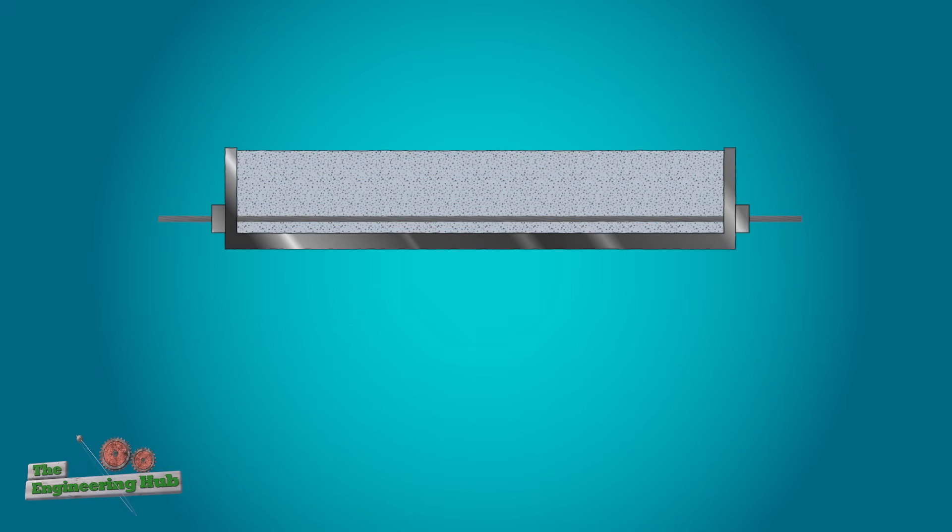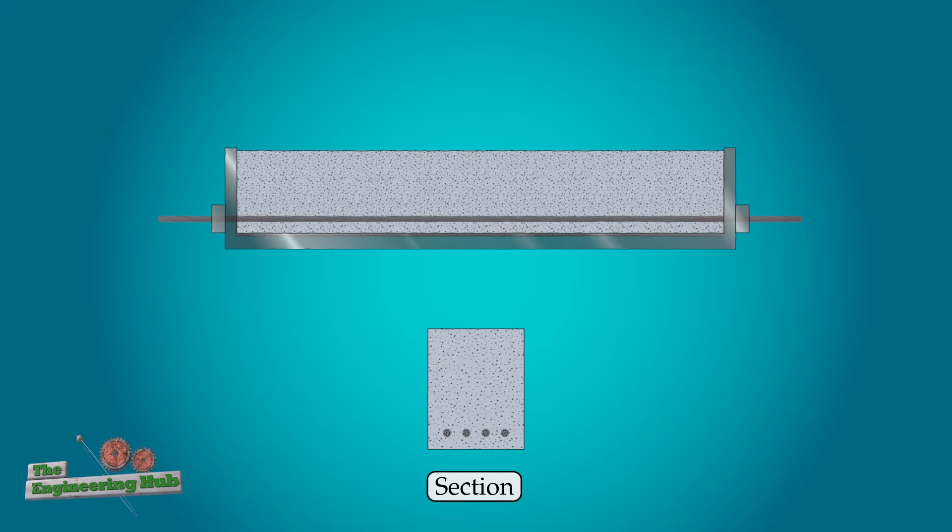Next the concrete is poured and then allowed to cure. Once cured, the cables can be released from the tensioning forms.